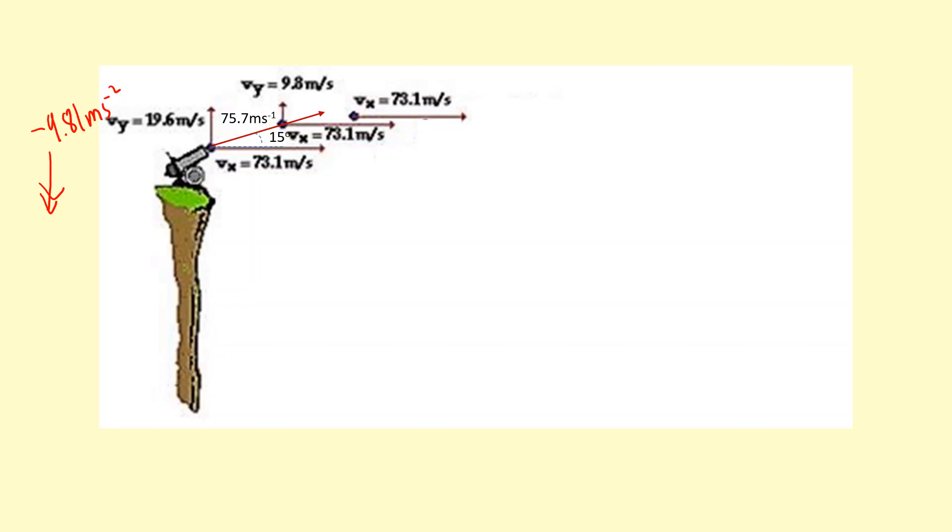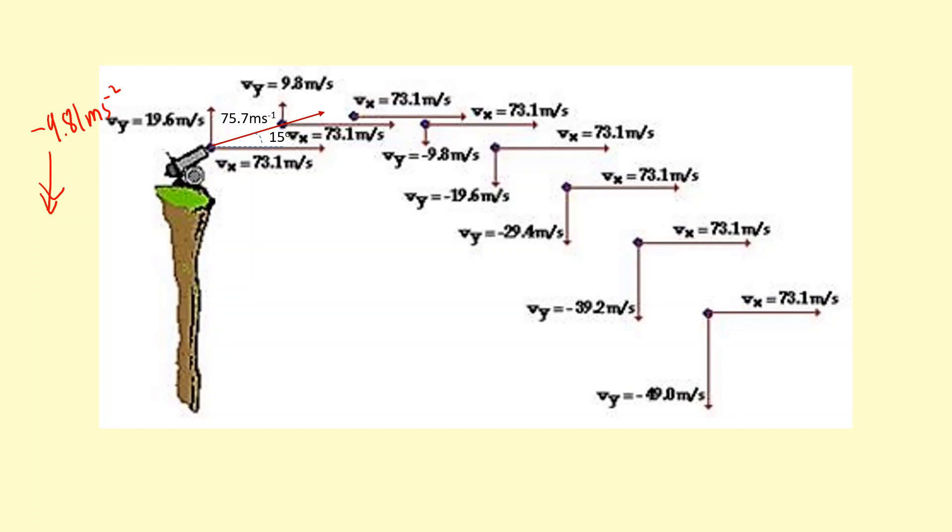It will carry on accelerating downwards. Notice how the horizontal speed is constant. Then it will eventually hit the ground depending on how high the cliff is, and we'll be able to figure out the velocity it hits the ground at by using trigonometry and Pythagoras.